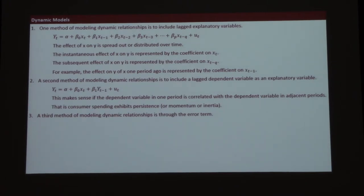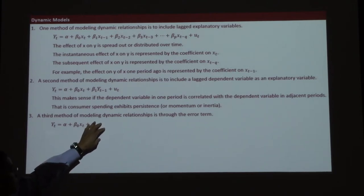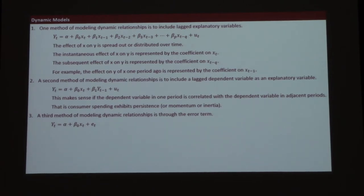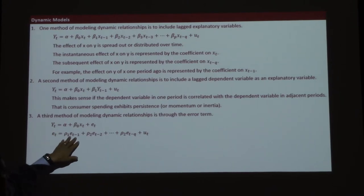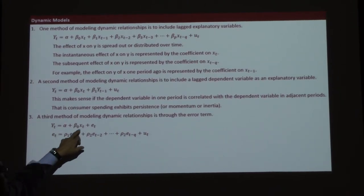A third method is including the lag in the error terms. The error term includes all things that affect y but that we haven't accounted for — things we can't measure, measurement error, or variables we don't have data on. Those unobserved things that we can't account for could also exhibit persistence or momentum. So we throw that into the error term: this period's error as well as last period's error, and so on.